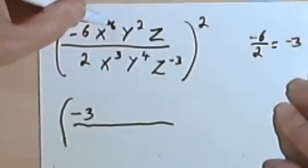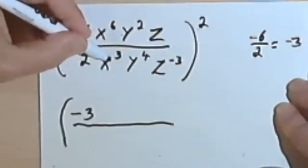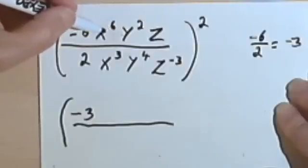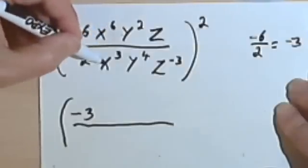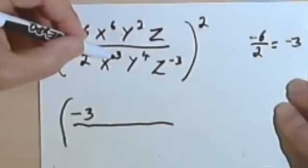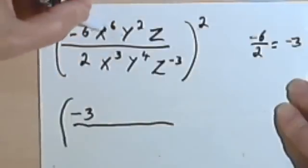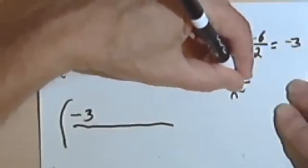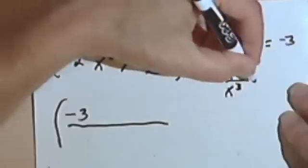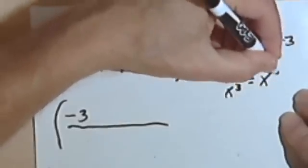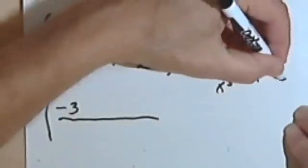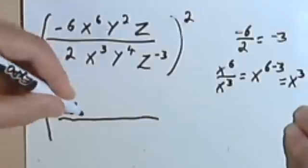I've got x to the 6th over x to the 3rd. When you're dividing variables with exponents and the bases are the same, you subtract the exponent in the denominator from the exponent in the numerator. So x to the 6th over x to the 3rd becomes x to the 6 minus 3. And 6 minus 3 is 3, so it becomes x to the 3rd.